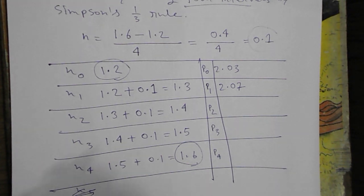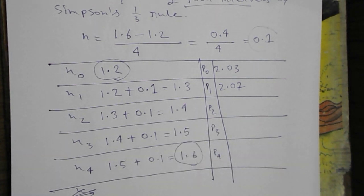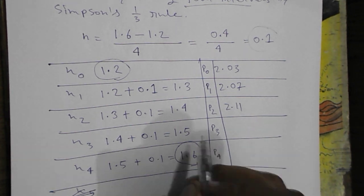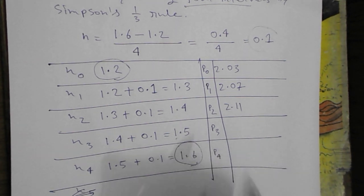Now like this we will calculate 1.4. By replacing with x, 1 by 1.4 is 0.71. 0.71 plus 1.4, that is 2.11.